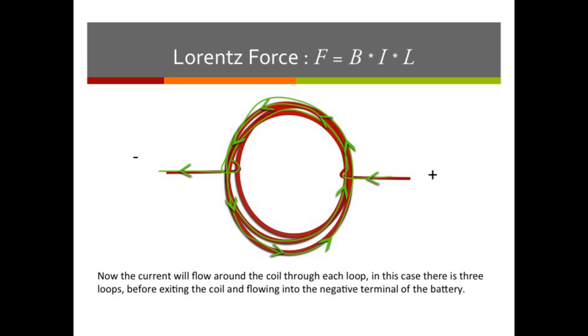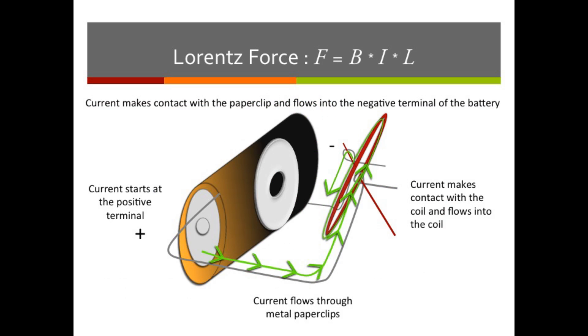The current will flow through the wire and around the loops. In this case, you have made three loops, so the current flows around the coil three times and then exits the coil and flows into the negative terminal of the battery.